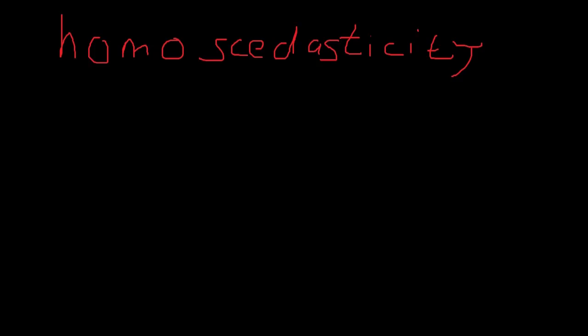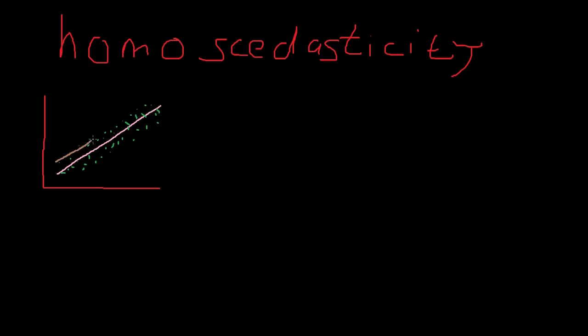You might remember from our video on variance that variance measures how far our numbers are spread out. In other words, your errors should be spread out evenly as you go along the regression line. So you draw a plot, get a regression line, and your errors should be randomly scattered around the regression line, with the variance staying the same — it should look like this, because as you can see the variance is constant over time: this is homoscedasticity.